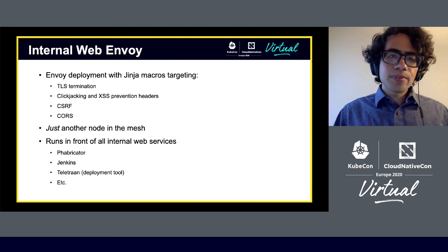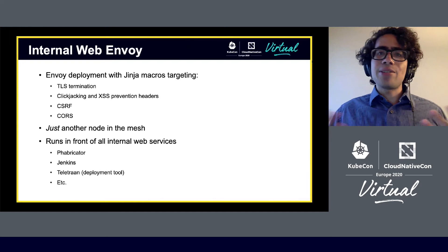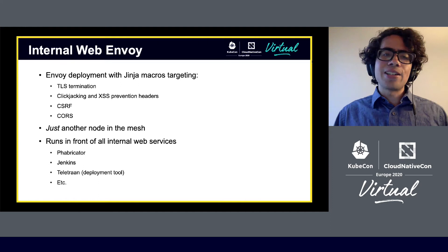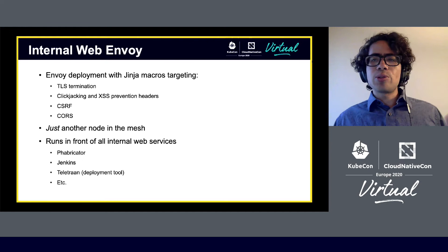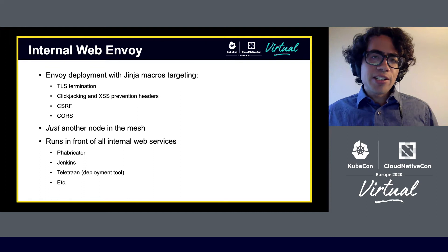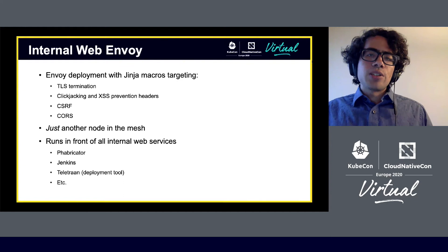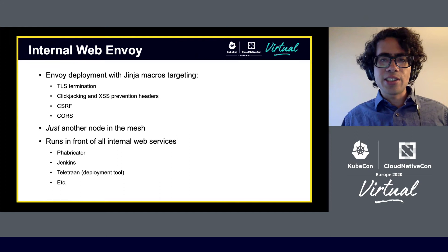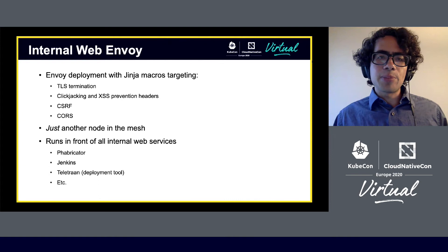With the fundamentals in place, we started to get a lot of new use cases and feature requests from teams outside of traffic. One of my favorite early use cases came from security: Internal Web Envoy. Pinterest has a lot of internal web services — deployment tooling, ML tools, whatever you could imagine. The security team built a configuration pipeline that enables Envoy to be deployed with standard, well-accepted security defaults for web services, such as CSRF protection, CORS protection, TLS termination, and click-jacking and cross-site scripting prevention headers — all without the web developers having to do much except define their service in the Envoy configuration Jinja language.